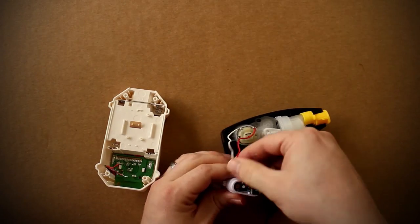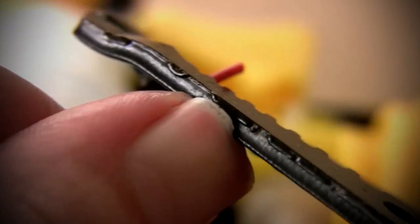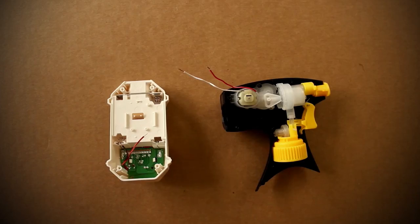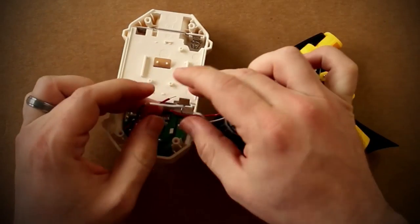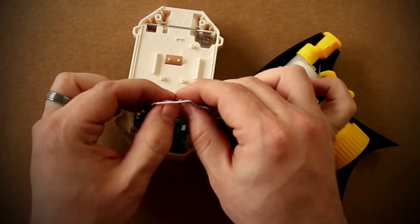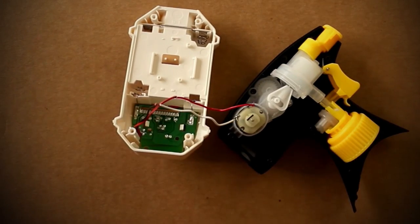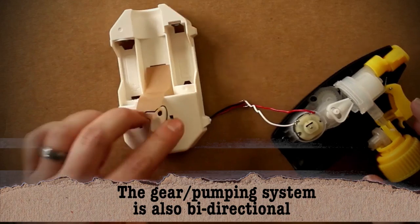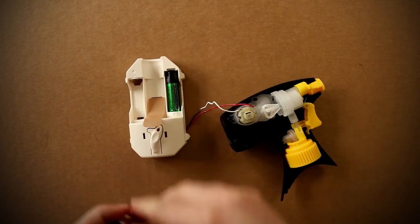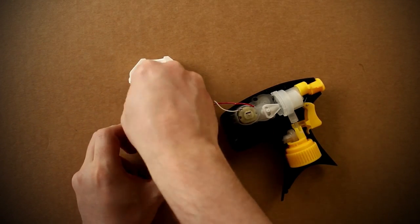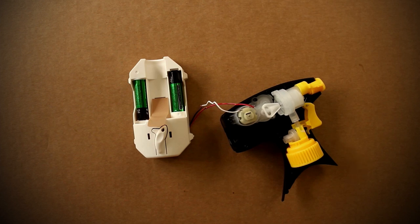Then on the sprayer side, cut the wires that go to the battery pack and strip them as well. Now we want to connect these two sets of wires together. Since DC motors are bi-directional, the wire colors really don't matter. If you put the batteries back into the air freshener and trigger the sensor, it should activate the automatic sprayer.